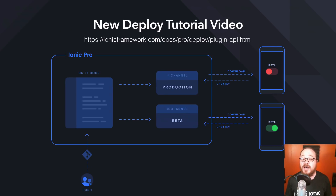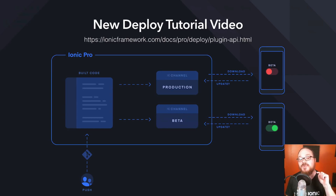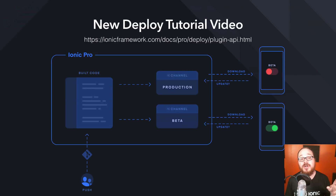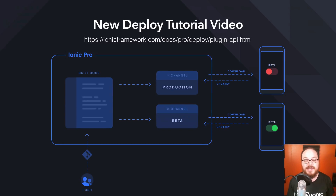To help you set this up, we came out with a new Deploy tutorial video. This is a very in-depth video that goes through how to set up Deploy, how to use our Pro Client API to set up a special beta channel that your users can opt into with a toggle and get new features before the rest of your users. You just push code up to us, choose which channel you want that code to go to, and your users will get that update right on their devices. Check out that new video in our documentation.